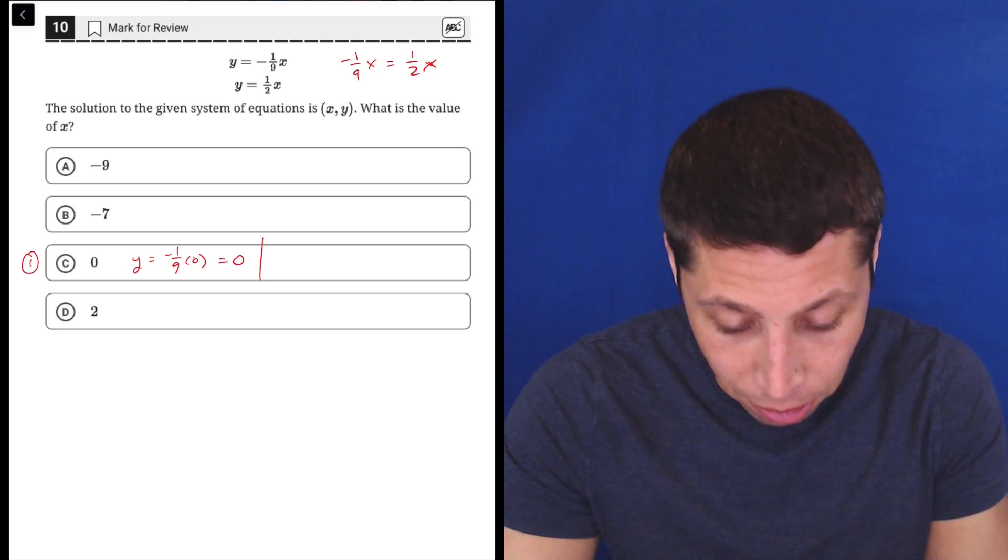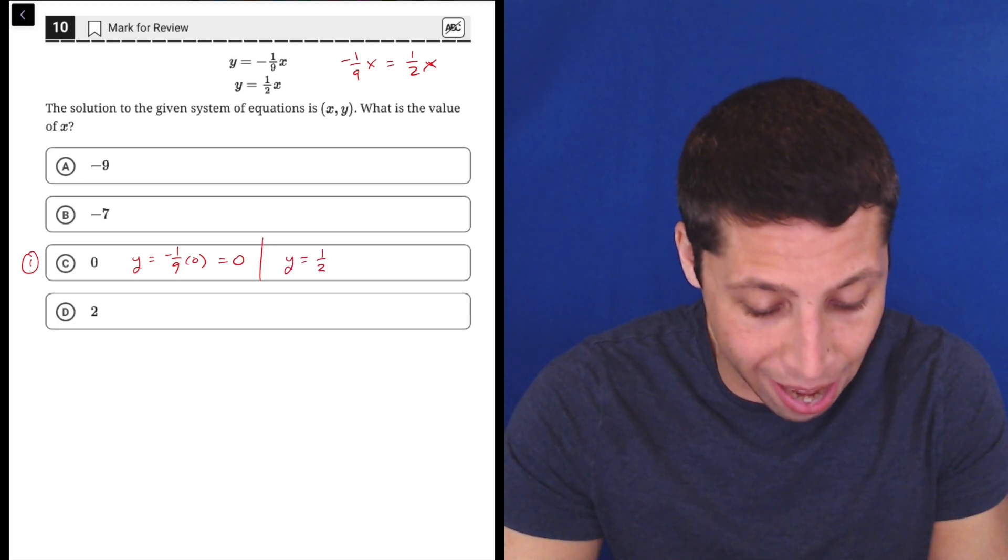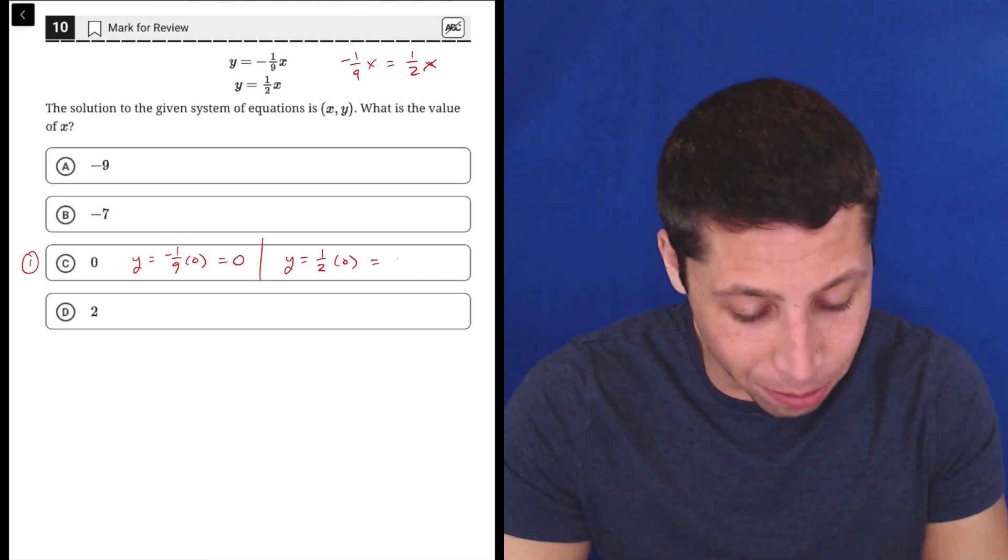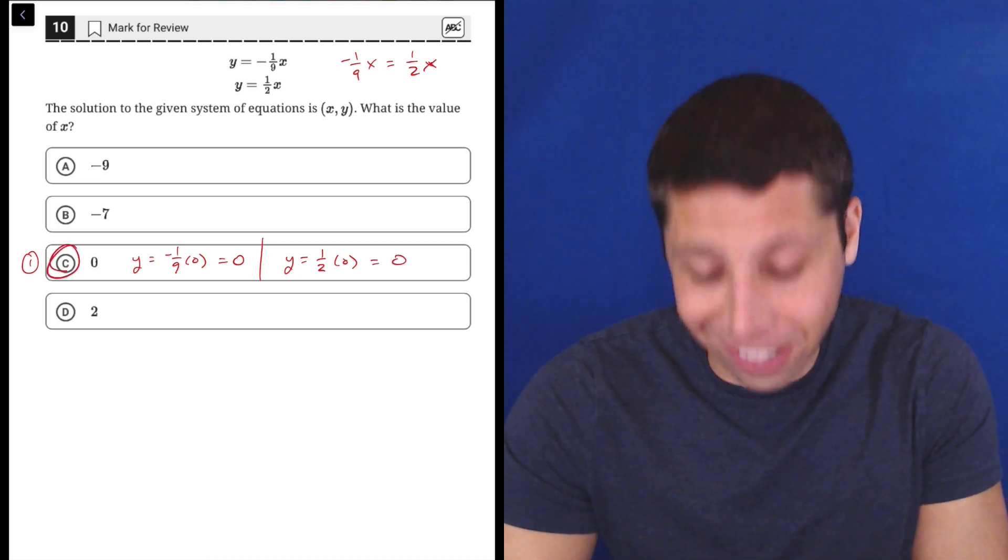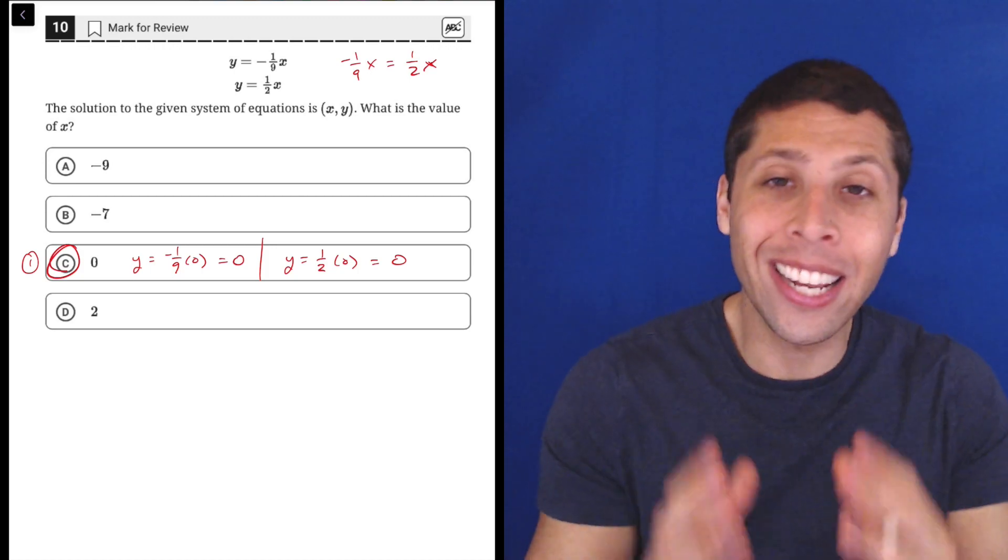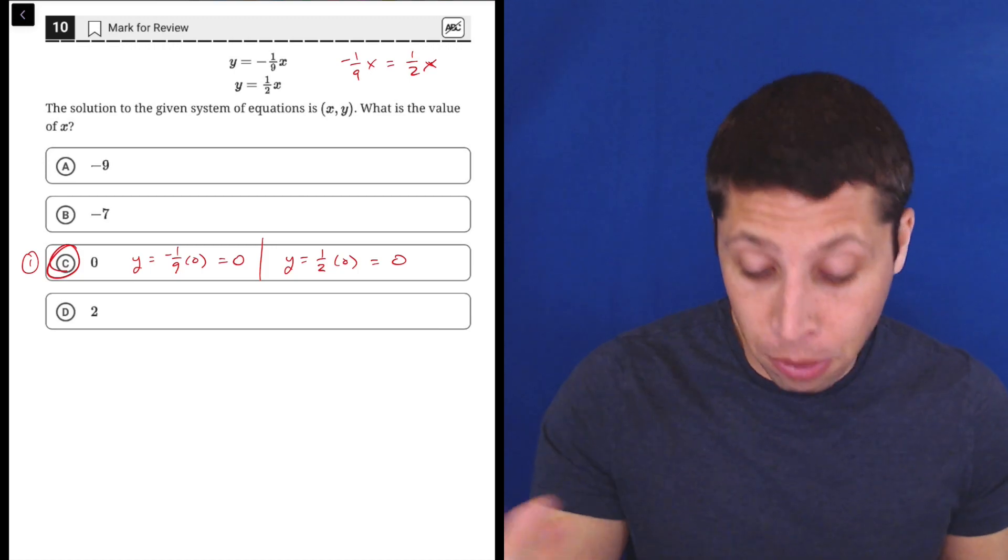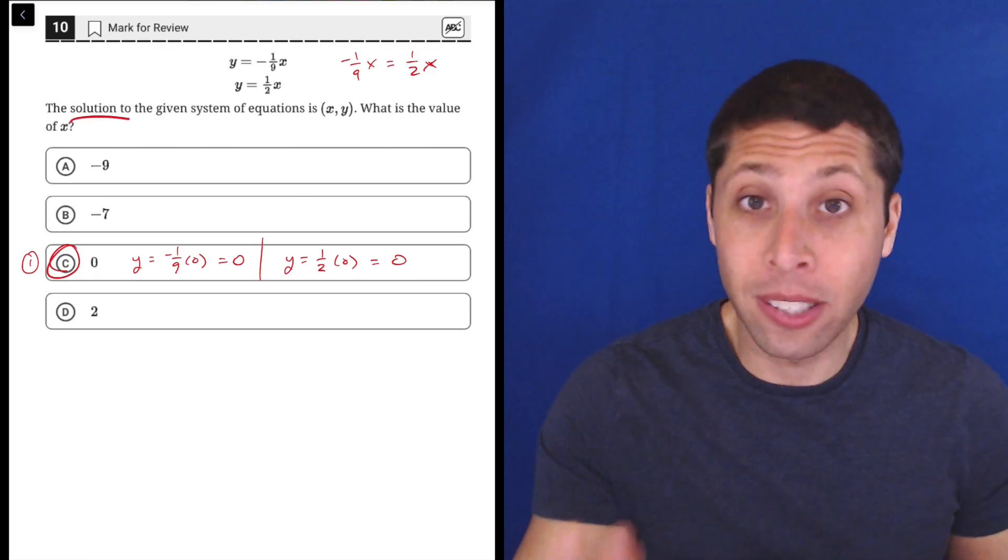And then if we do the same thing for the other equation, y is equal to one half times zero. Well, anything times zero is zero. So this is the answer because the coordinate is the same. Zero, zero is basically the point that is the solution for this system.